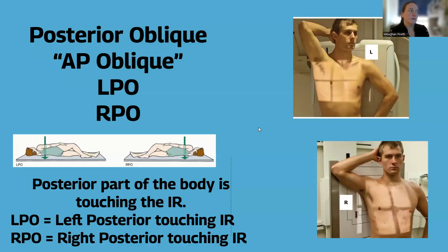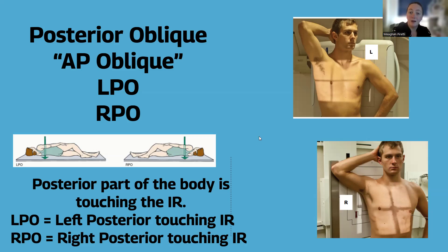For posterior obliques, the patient is in an AP oblique. Again, the names tell you what is touching. LPO means left posterior — you'll see this patient's left side of his back or posterior is touching the IR, versus RPO where the right is touching. They could be upright or recumbent. Left posterior touches for LPO, right posterior touches for RPO.